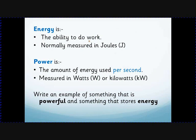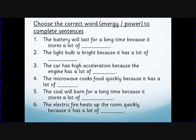First, some definitions. Energy is really strangely difficult to define, so you usually end up with: the ability to do work. All that means is that to do anything you need energy — to climb stairs, to make a car go, to make a light bulb light. Energy is measured in joules — capital J, named after James Joule. Power is the amount of energy used per second, measured in watts — capital W, named after James Watt — and sometimes we use kilowatts.